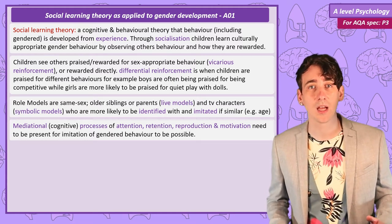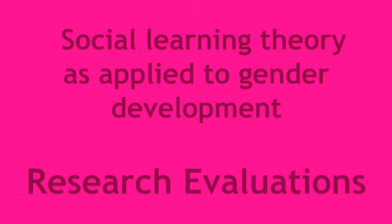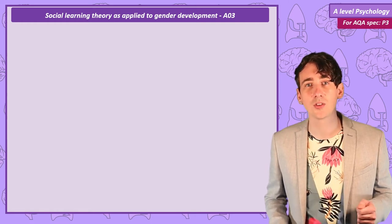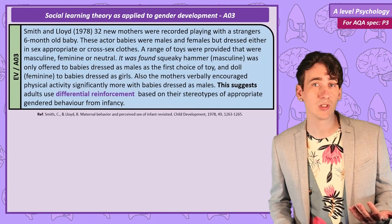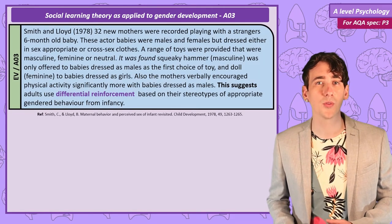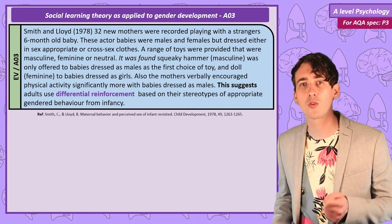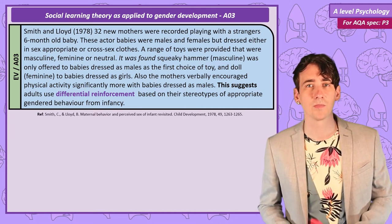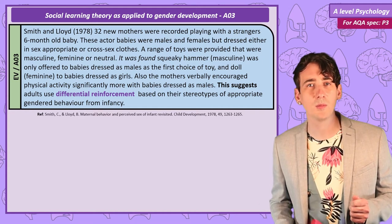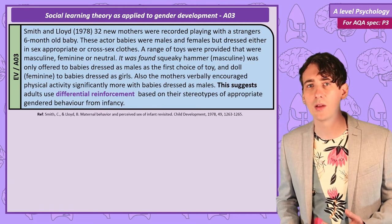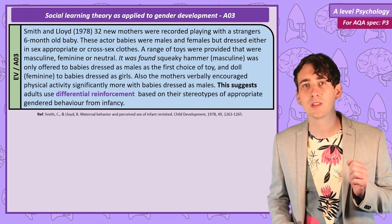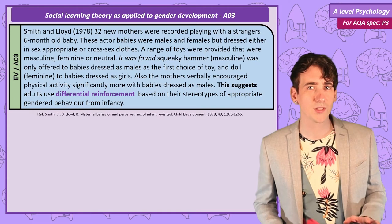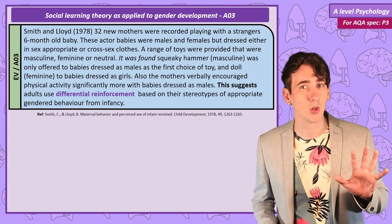You can think of any gendered behaviour and plug it into this process. Our first research evaluation is a really clever study that examined if differential reinforcement is real. Smith and Lloyd got 32 mothers who had recently had their first child, and told them they were doing a study investigating play. They introduced them to a stranger — a six-month-old baby — and asked them simply to play with the baby for ten minutes in a room with a selection of toys, recorded from a hidden camera. The babies used were either biologically male or female, and were either given sex-appropriate names and clothes, or cross-sex names and clothes — so half the time the mothers were playing with babies dressed and named to make them think they were the opposite sex.